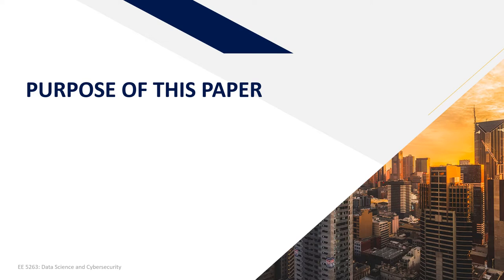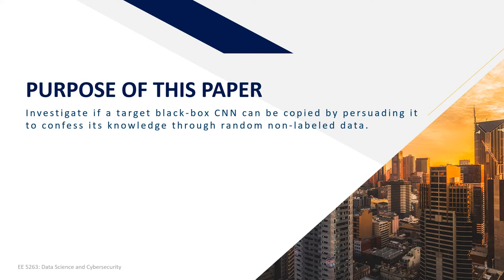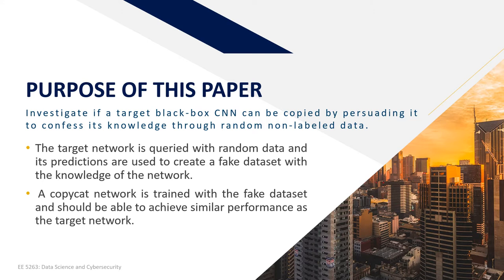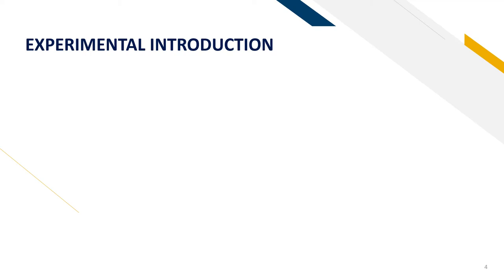Based on what we noticed in the background, in this paper they investigate if a target black-box CNN can be copied by persuading it to confess its knowledge through random non-labeled data. The copy process is two-fold: first, the target network is queried with random data and its predictions are used to create a fake dataset containing the network's knowledge; second, a copycat network is trained with the fake dataset and should achieve similar performance as the target network.